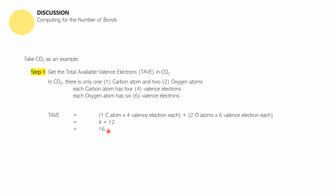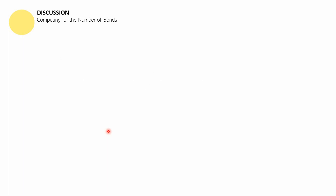That's step one. Now for step two, you compute the Octet Rule Requirement, or ORR. While we work on CO2, you can try methane (CH4) on your own as a practice example. The ORR tells us how many valence electrons are actually needed for all atoms in the compound to become stable — that is, to satisfy the octet rule.